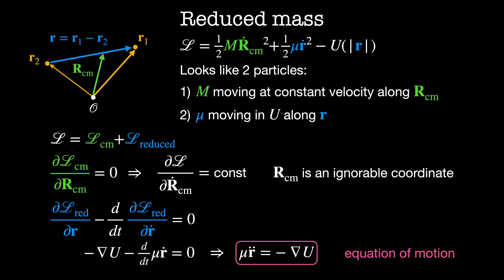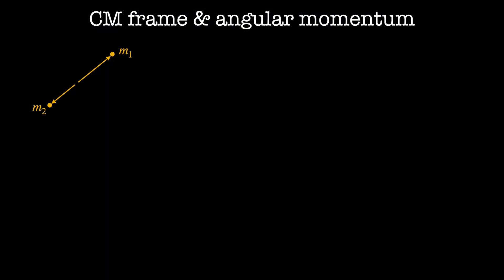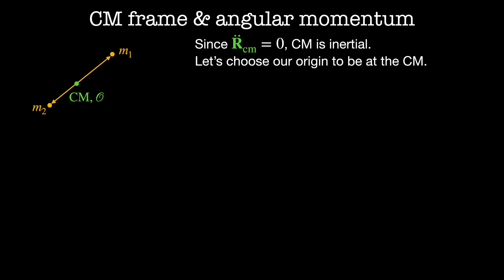We're going to see in a minute that we can actually reduce this problem down to a 1D system. This type of coordinate reduction is related to the symmetries of the problem. This is a poster by Katiyun Movasegi, a master's student at the University of Toronto-Scarborough, using the two-body central force problem as an example of how symmetries — in particular the Hamiltonian formalism — can lead to reduced dimensionality. We've shown that rcm is an ignorable coordinate, which means the center of mass can't accelerate. So we can choose an inertial coordinate system where the center of mass is at the origin with velocity zero.